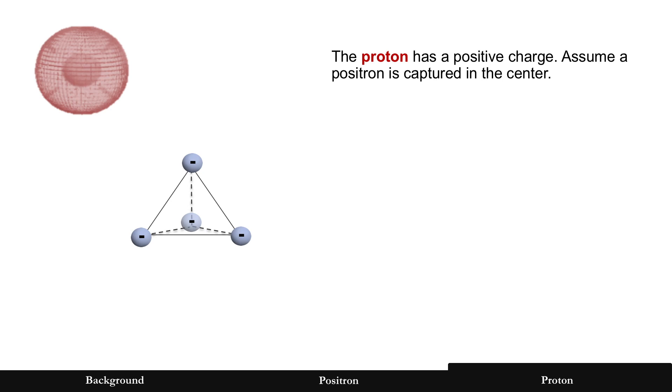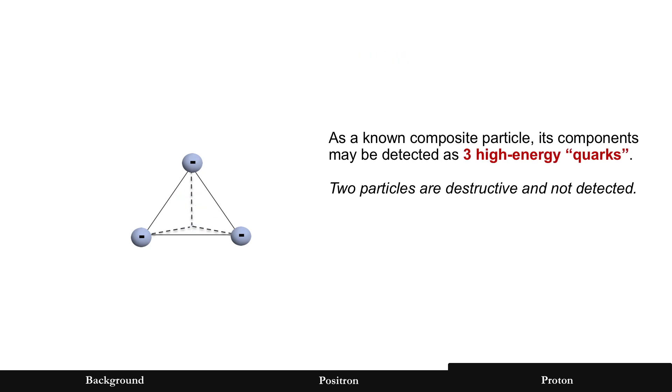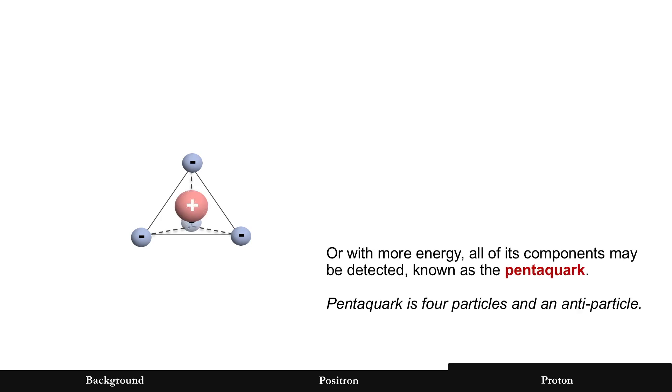But the proton still has an electric force that is positive. So we're going to take this a step further. We're going to assume that the geometry of the proton has a positive charge, and let's assume that that positive charge is the positron and it's captured in the center. It would match experiments because it would be a composite particle. And its components might be detected as three high-energy quarks. Remember, they have significant energy. Two of those particles are destructive and cannot be detected. It would also match this: with more energy, all of its components could be separated, and that would be known as the pentaquark, a particle with four particles and an antiparticle. So it matches that as well for this geometry.